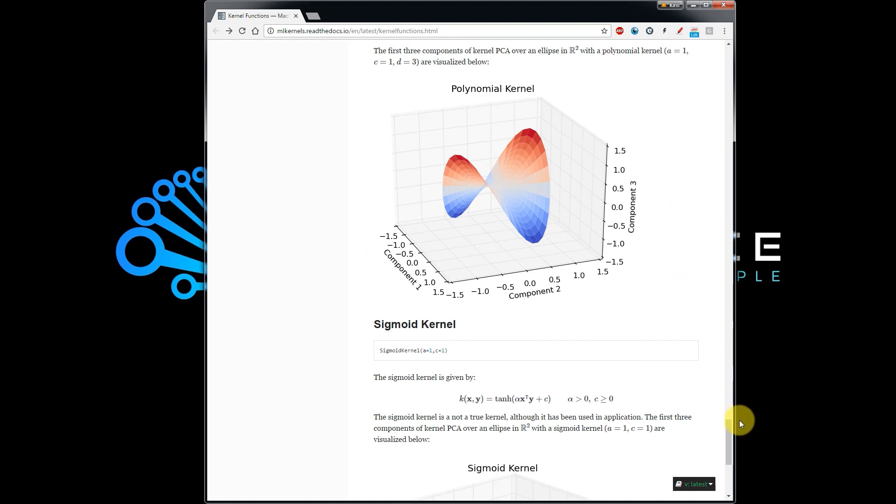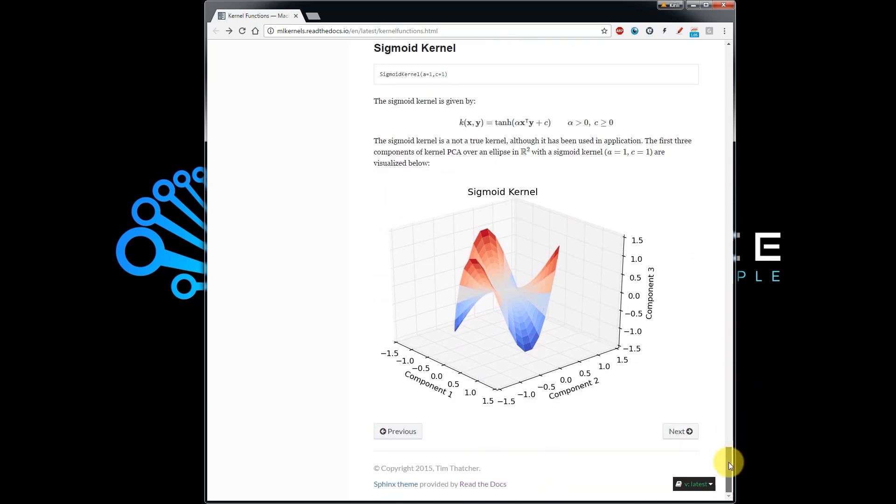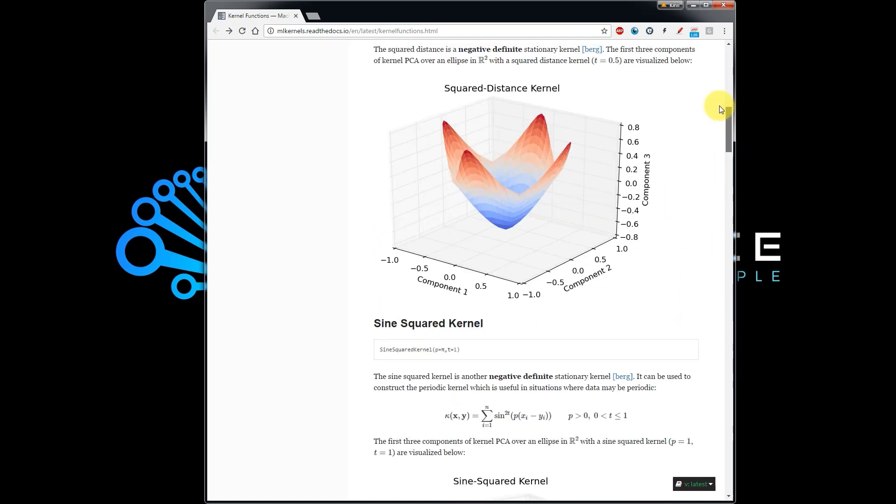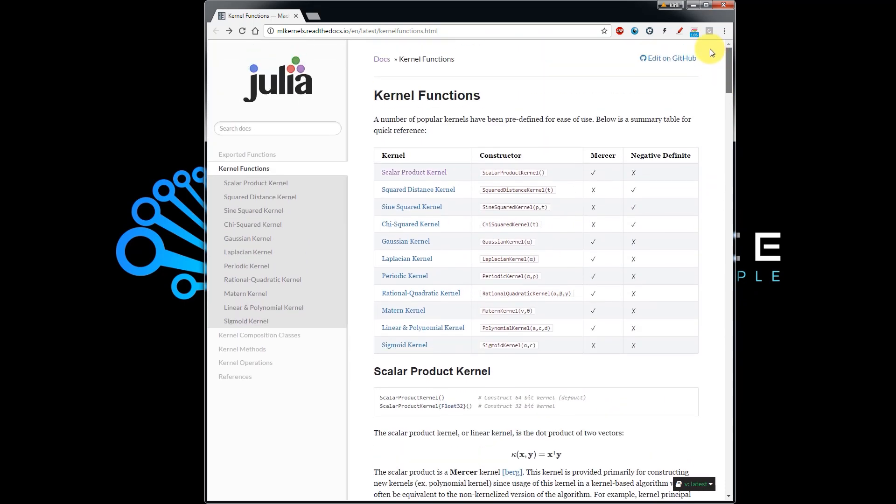But it's always good to know that other types of kernels exist and are available to you. There's the sigmoid kernel which we talked about as well.